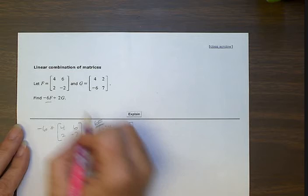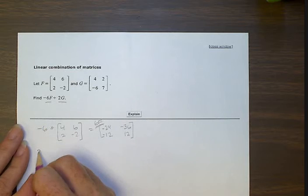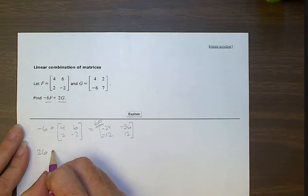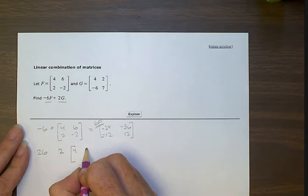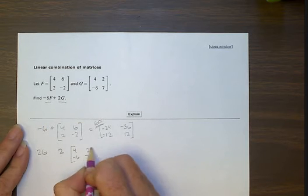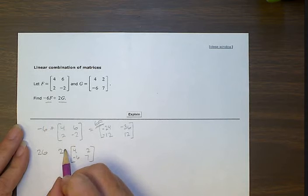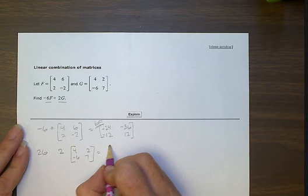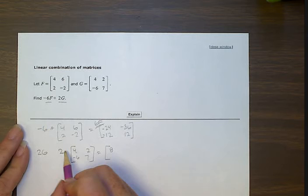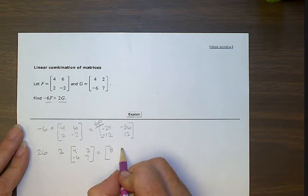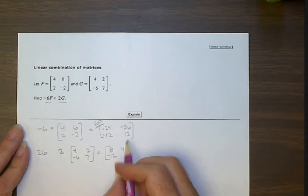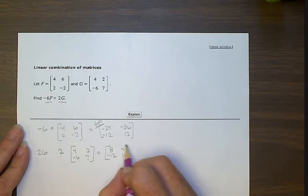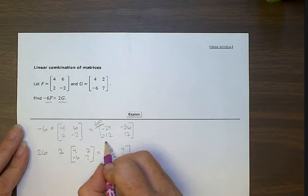Then we're going to find 2G. 2G is 2 times this matrix: 4, 2, negative 6, 7. We're going to take 2 and multiply it by the 4, that gives us 8. 2 times 2 gives us 4. 2 times negative 6 is negative 12. 2 times 7 is 14. This is our 2G answer.